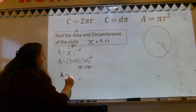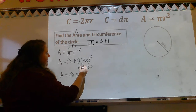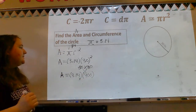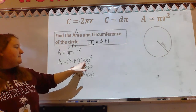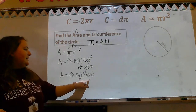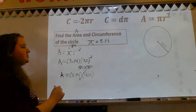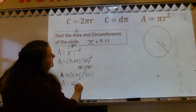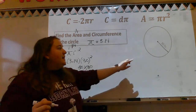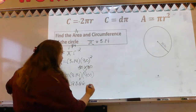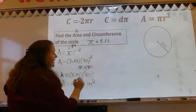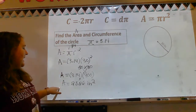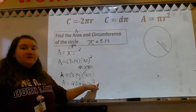Area equals 3.14 times 900. So 3.14 times 900 — the area of this circle is 2,826. Look at the unit: we have inches, and for area we do squared. So following the formula, A equals pi r squared, area equals 2,826 inches squared.